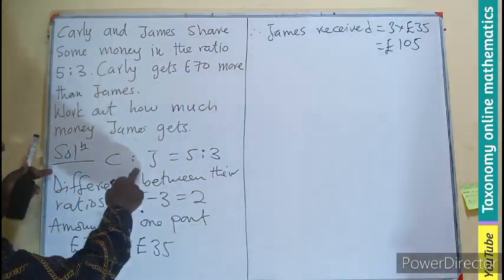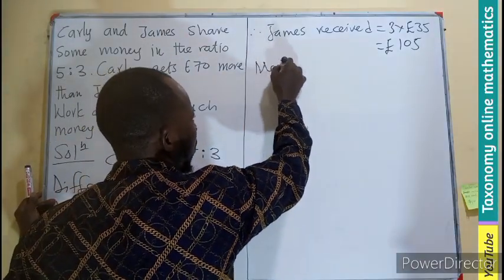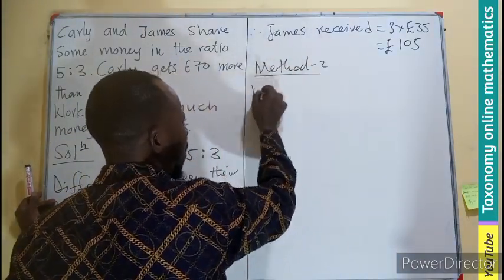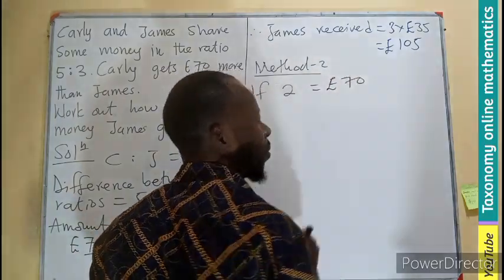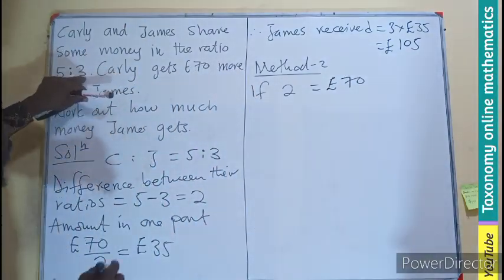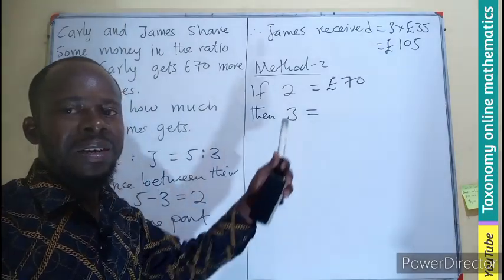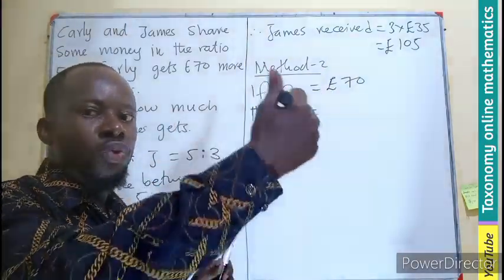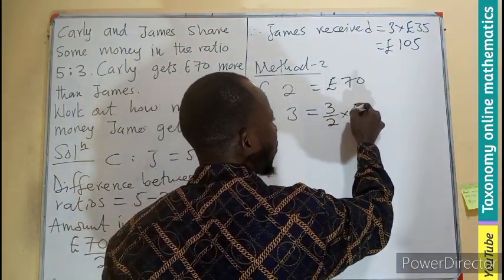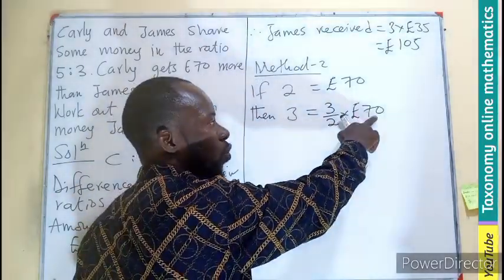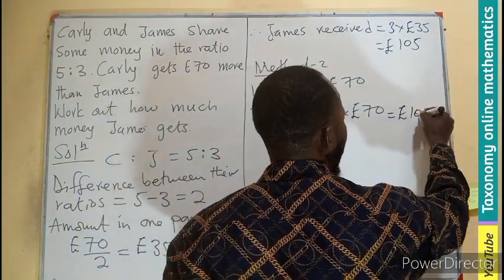That is one way to get the answer. Kali receives James's amount plus 70 pounds. From here, after finding the division, we can also say: if 2 divisions give rise to 70 pounds, then for the 3 divisions going to James, we use 3 divided by 2 times 70 pounds — that gives 35 times 3, which still gives us 105 pounds.